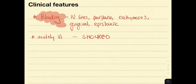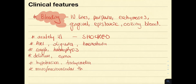So to recap the clinical features: bleeding is the key feature, because due to the lack of platelets and factors, bleeding cannot be controlled, so there is failure of the coagulation pathway. Patients usually present acutely ill and shocked. Clinical features really depend on which part of the body has been involved — indeed, it can be the entire body.